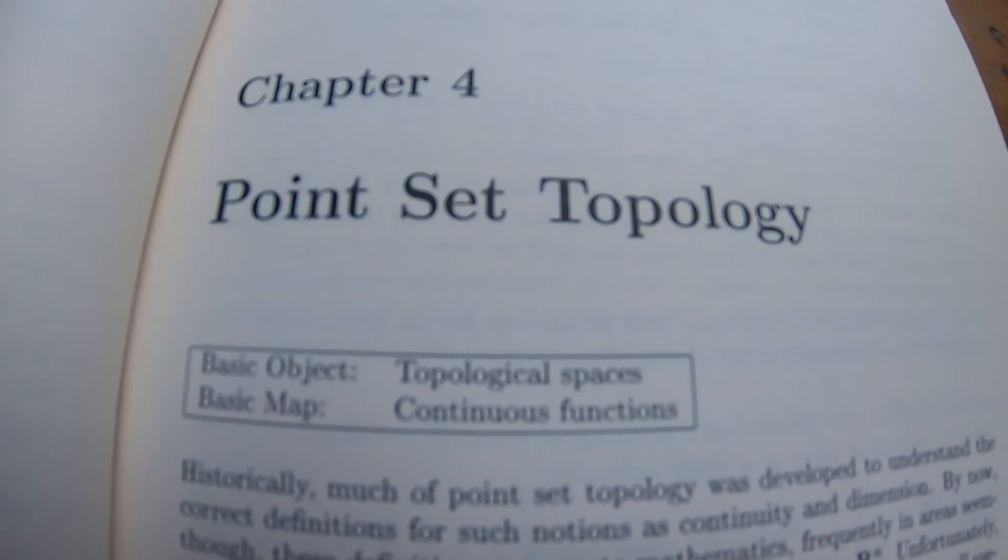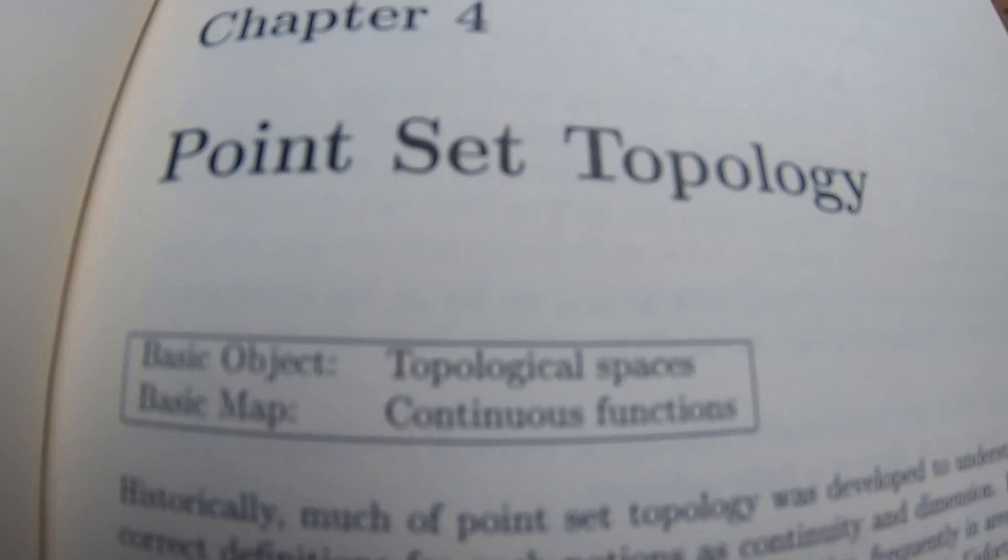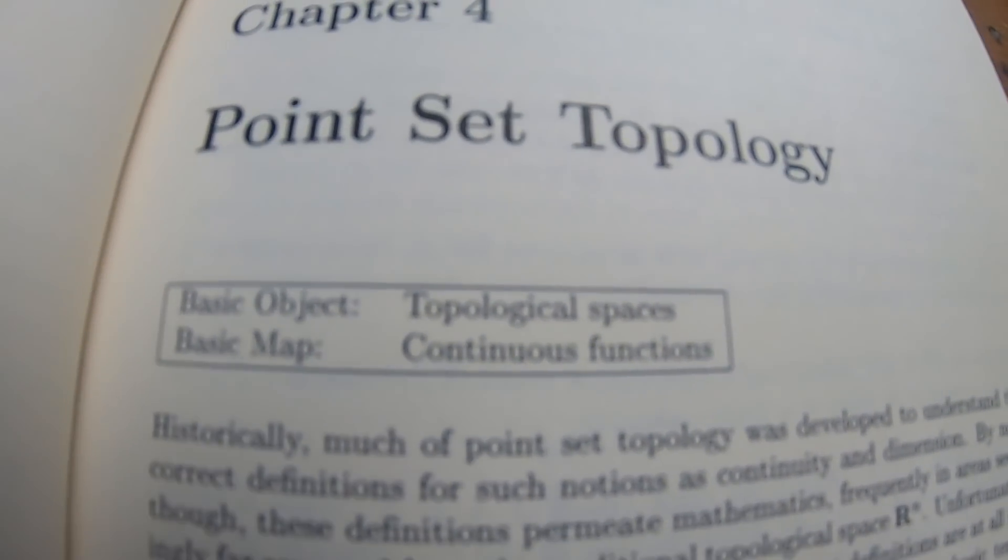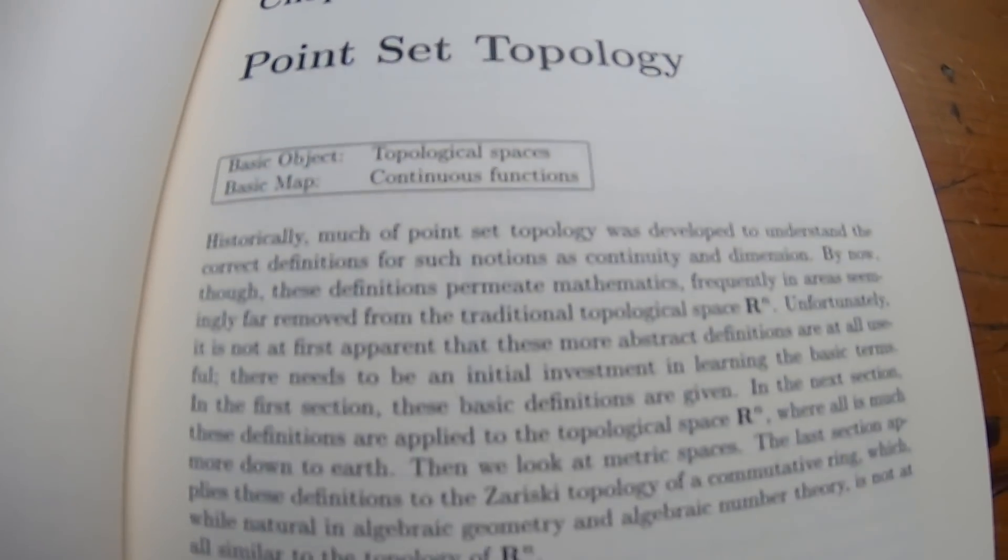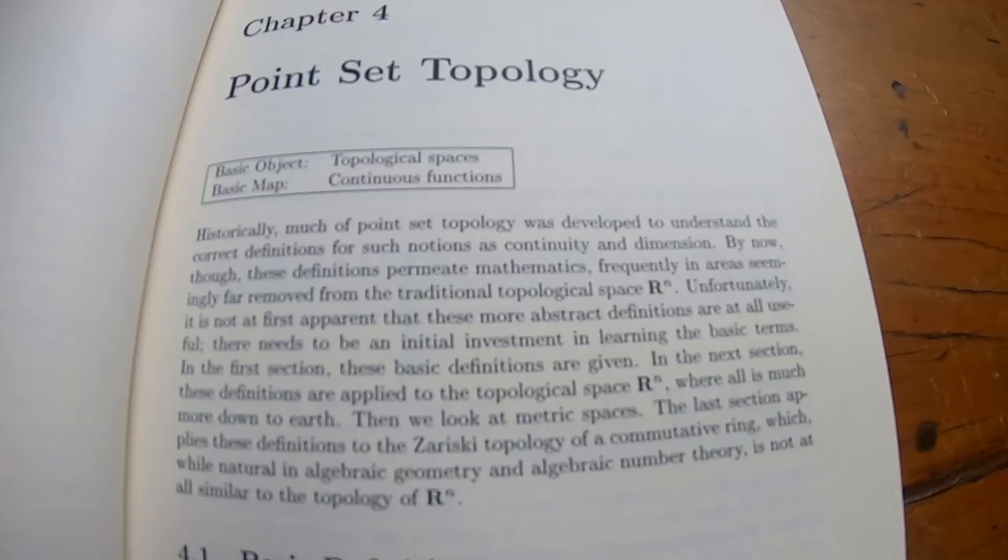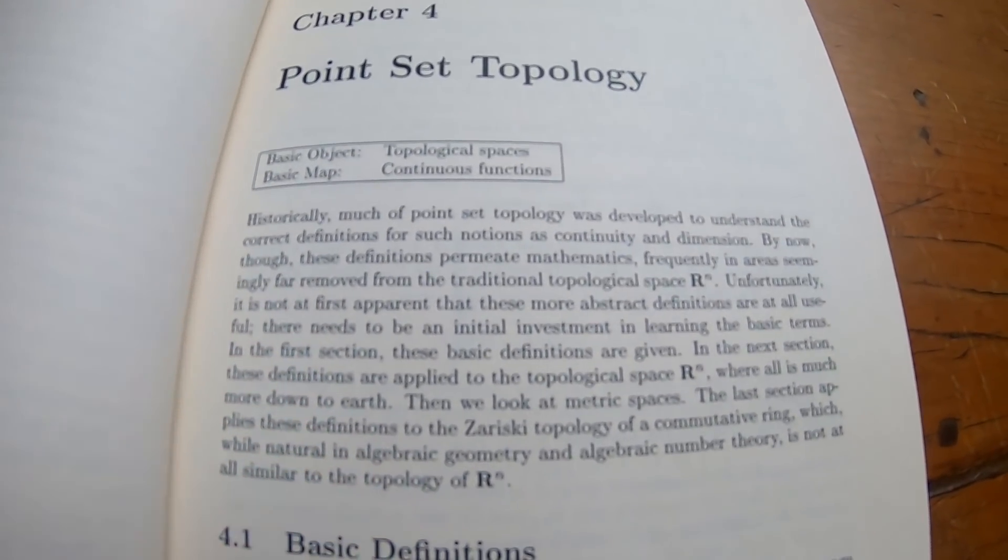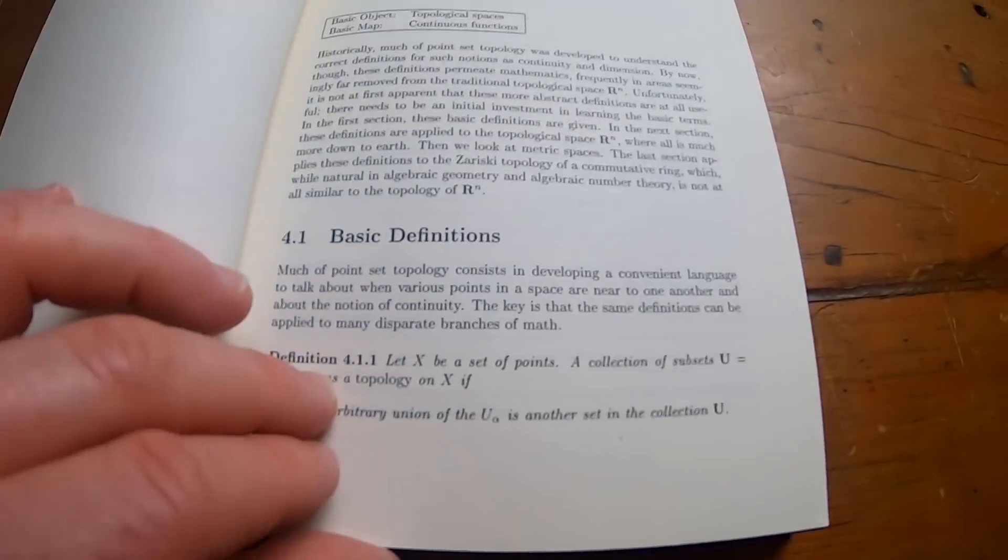This is chapter four on point set topology. So you see he does basic object, topological spaces, basic map, continuous functions. That's absolutely true. So really, really, really clean reading. And notice it's very wordy. Like, you just read it, right? There's no computations. There's a definition. Okay, let me turn the page.